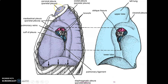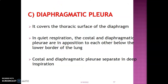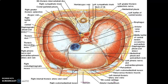The diaphragmatic pleura covers the thoracic surface of the diaphragm. In quiet respiration, the costal and diaphragmatic pleura are in opposition to each other below the lower border of the lung. With deep respiration, the costal and diaphragmatic pleura will separate. So the diaphragmatic pleura lies on the thoracic surface of the diaphragm, and during deep inspiration the two layers separate.